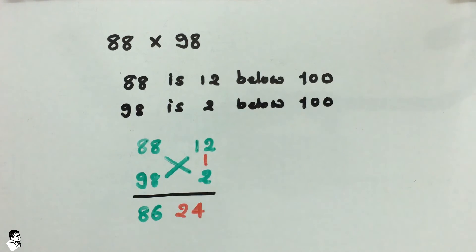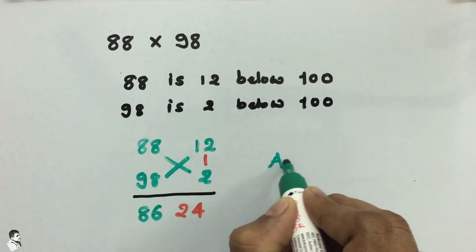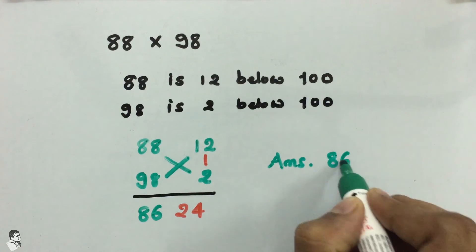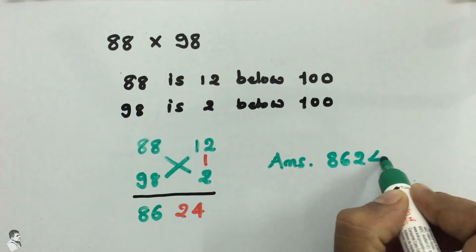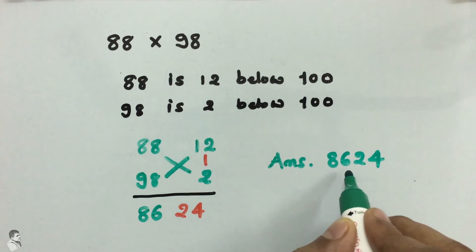So after this crosswise and vertical calculation, the final answer for this multiplication is 86 and 24, that means 8624. So now it is very easy to multiply numbers that are close to 100.